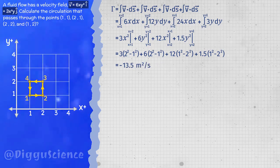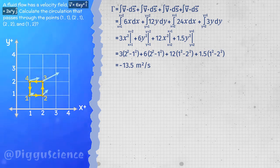Gamma is equal to minus 13.5 meters squared per second. What does this value mean? The negative sign on gamma indicates that the direction of the fluid velocity through the closed path is opposite to the direction of the loop.